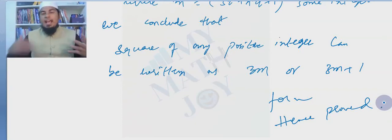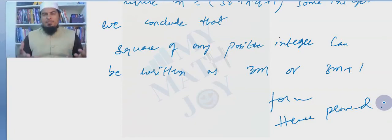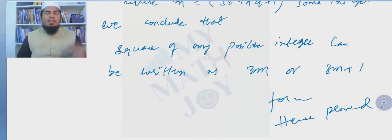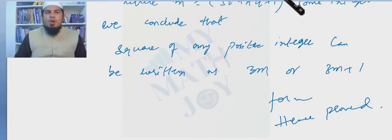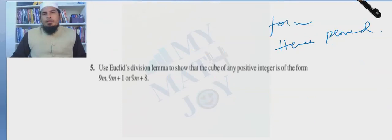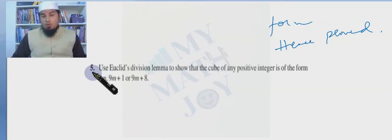Euclid's division lemma has two main obligations: one is to prove mathematical statements, and one is to find HCF. Let's move on to the last problem — problem number five.